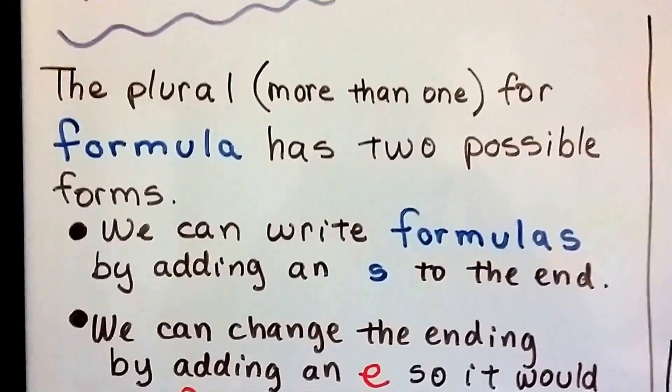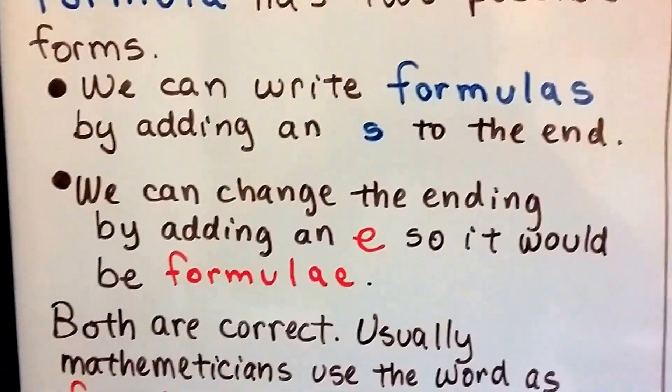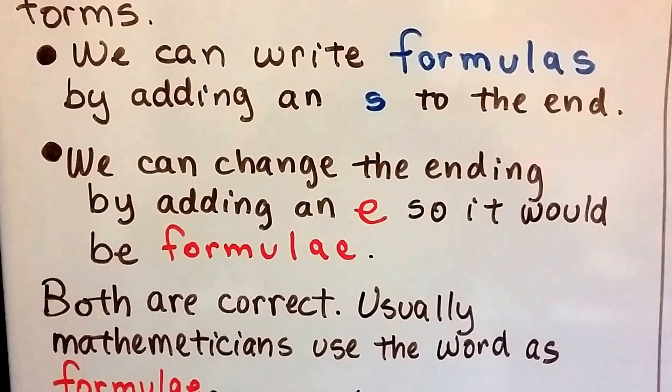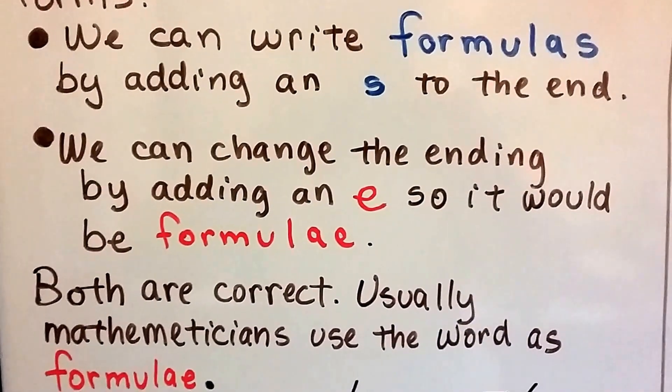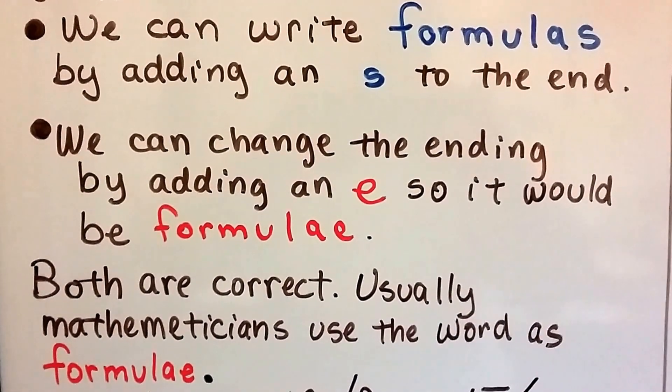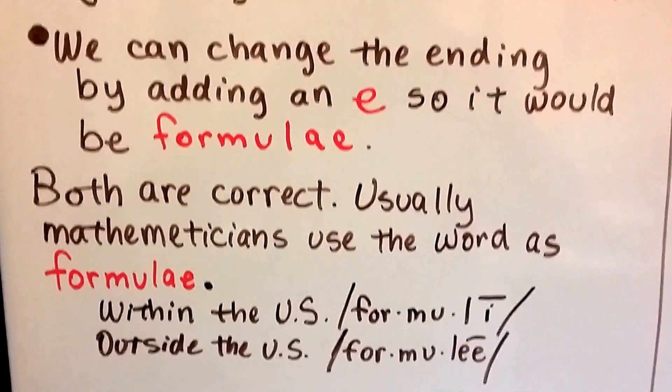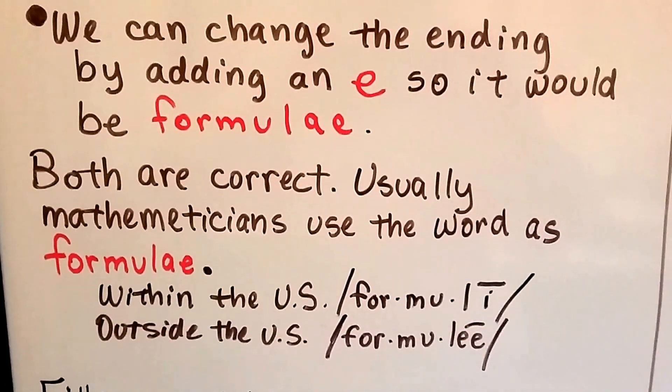The plural, more than one for a formula, has two possible forms. We can write formulas by adding an S to the end. We can change the ending by adding an E so it would be formulae. And both are correct. Usually mathematicians use the word formulae.